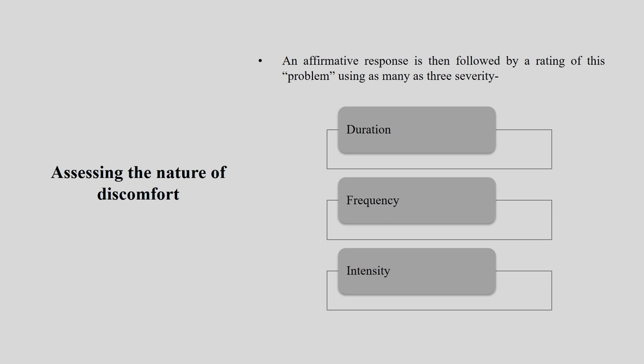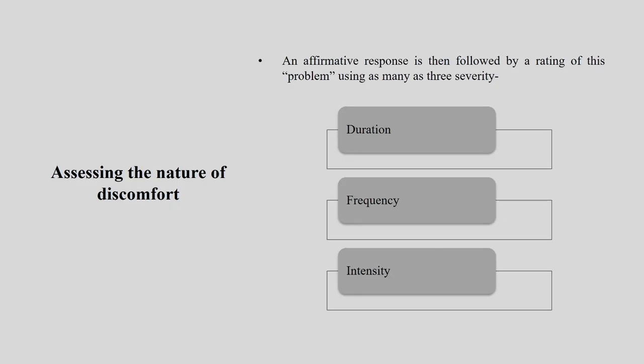This looks like a very simple tool; however, it is very important and provides very detailed screening of your population if your research is oriented on the topic of musculoskeletal disorder. Once an affirmative response is obtained, we go into more detail. An affirmative response is followed by ratings on duration — how long these problems have persisted — frequency, and severity or intensity.